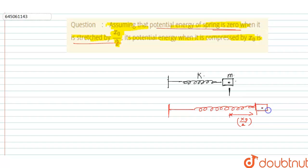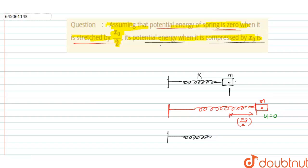Here is the mass m. The potential energy at this position is given as u = 0. In the third case, we have to find the potential energy when it is compressed by x₀. The spring is compressed by x₀ with mass m. We have to find the potential energy at this condition. Let us consider the initial position as uᵢ and the final position as u_f.